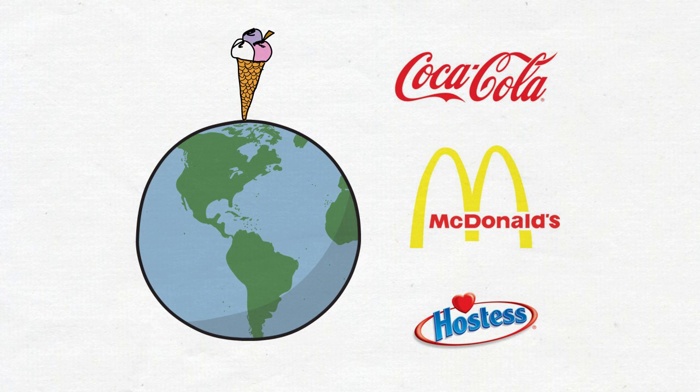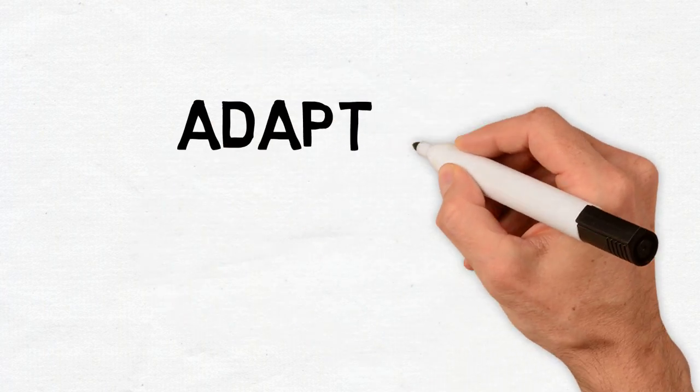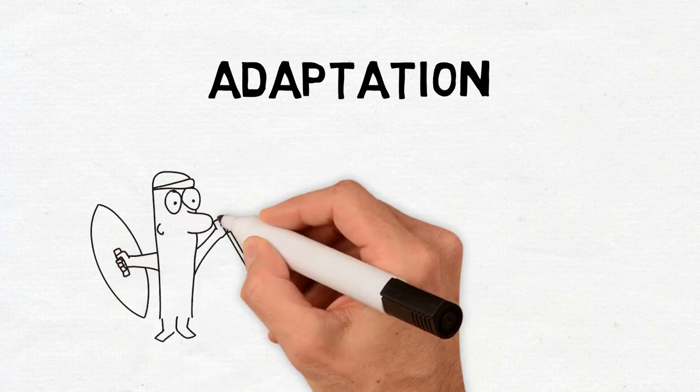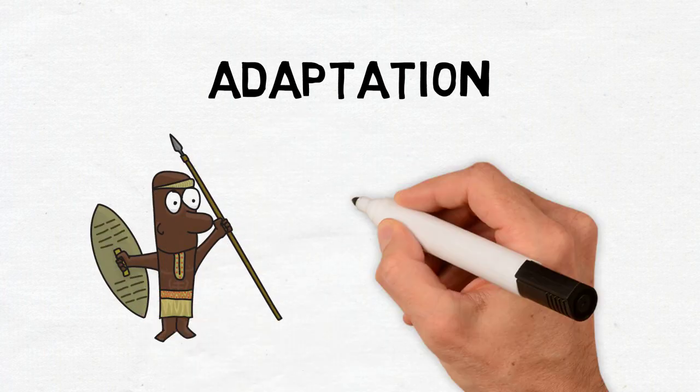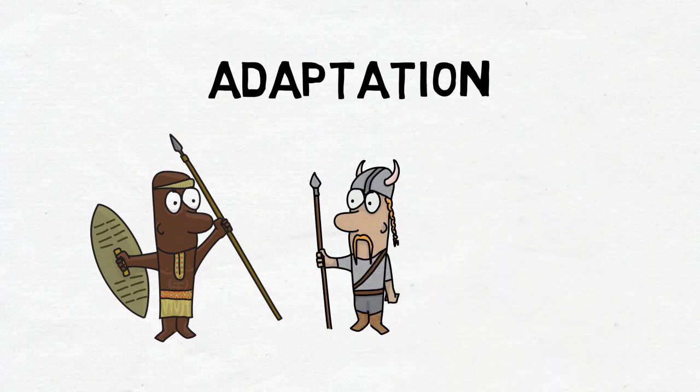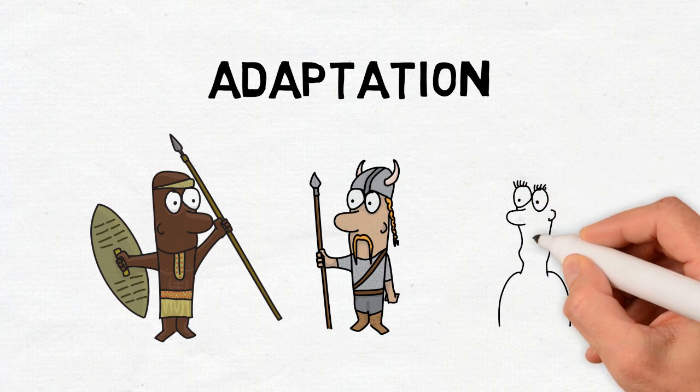The answer lies in adaptation, something that has proved to be the force behind human progress and survival over the past hundred thousands of years. Humans have adapted to every single environment across the planet, even Antarctica. So to solve this food problem, we have to adapt once again.